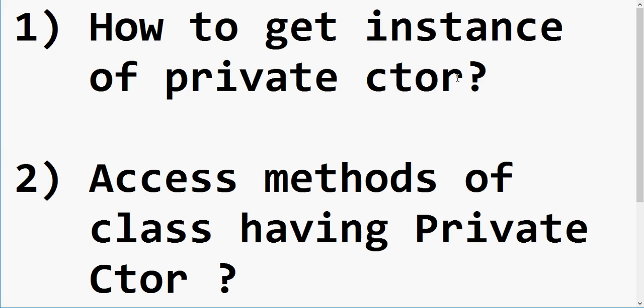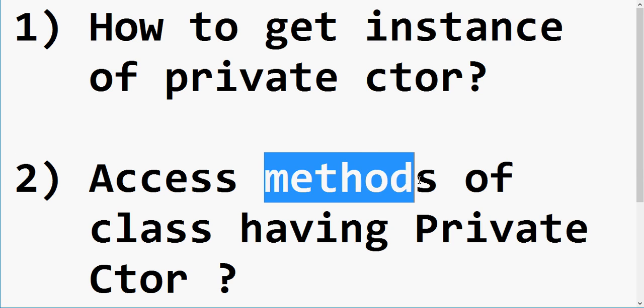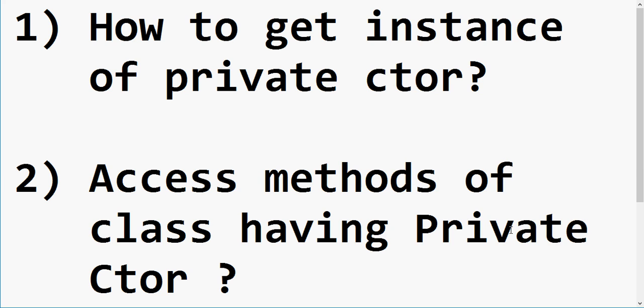We saw that if we have a private constructor, we are not able to initialize that class, and that class is not able to be inherited by other classes. So the question here is: if we have a class with a private constructor, will we not be able to create an instance of that class? In this video, we will cover how — in spite of having a private constructor — we can still get an instance of that class and use it to call methods or data members.